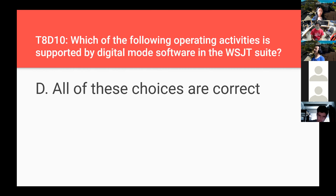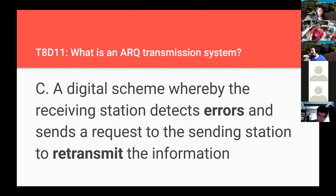Which of the following operating activities is supported by digital mode software in the WSJT suite? All of these choices are correct — just memorize that all choices are correct for digital mode software in the WSJT suite. What is an ARQ transmission system? It is a digital scheme whereby the receiving station detects errors and sends a request to the sending station to retransmit the information. ARQ stands for automatic repeat request or automatic repeat query.